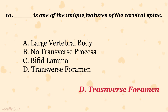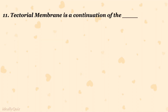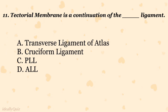The tectorial membrane is a continuation of which ligament? A. Transverse ligament of atlas, B. Cruciform ligament, C. PLL, D. ALL. The correct answer is C. PLL.